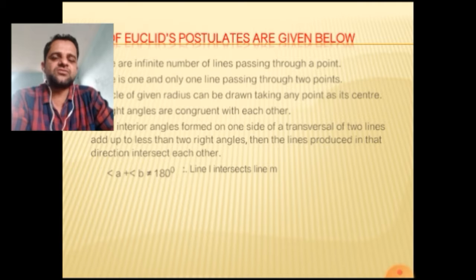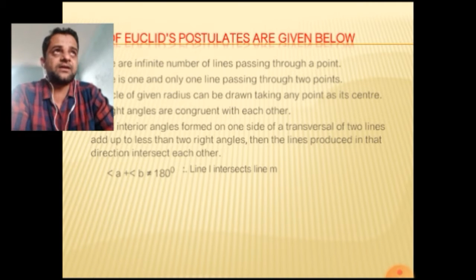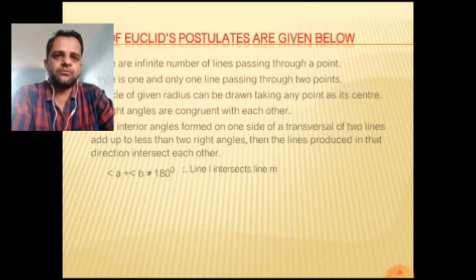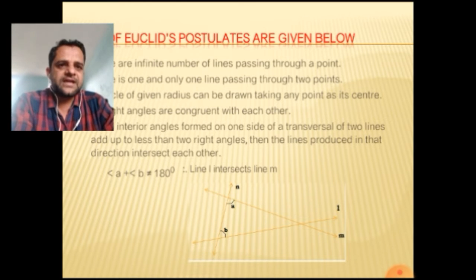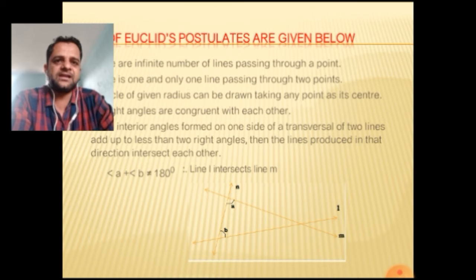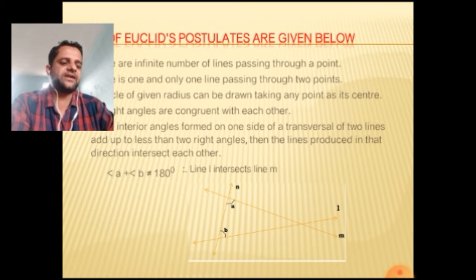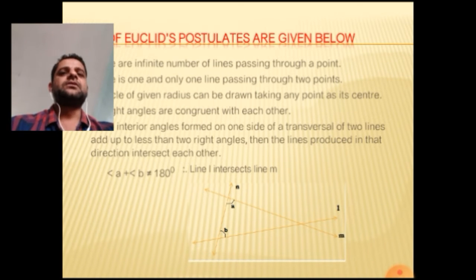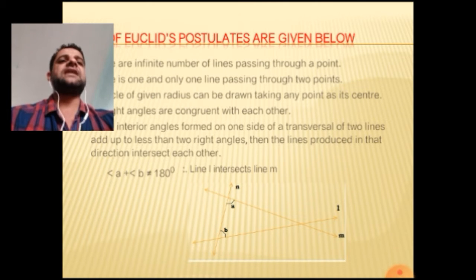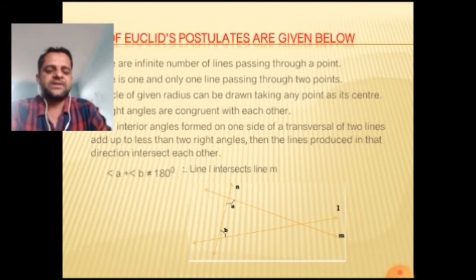For example, if angle A plus angle B is not equal to 180 degrees, then line L intersects line M. See the figure — two lines are drawn and intersect each other, making angle A and angle B. Since angle A plus angle B is not equal to 180, the two interior angles formed on one side of the transversal add up to less than two right angles, so the lines intersect.